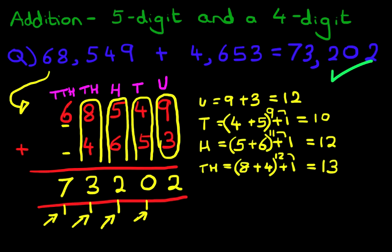That is correct. So that is how we do addition of a 5-digit number and a 4-digit number using the vertical format.